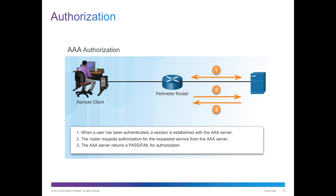AAA authorization does perform a process against a server. When a user is authenticated, a session is established with the AAA server. The router should request authorization for requested services — basically, what can I do? The server will pass a pass or fail response back to the perimeter router based off of the action you're allowed to do. For example, are you allowed to access level 7 or above? The AAA authorization should either allow or not allow you based off of the pass or fail.